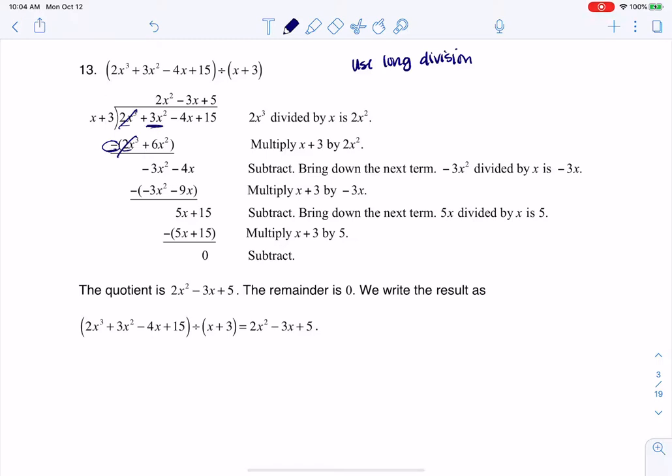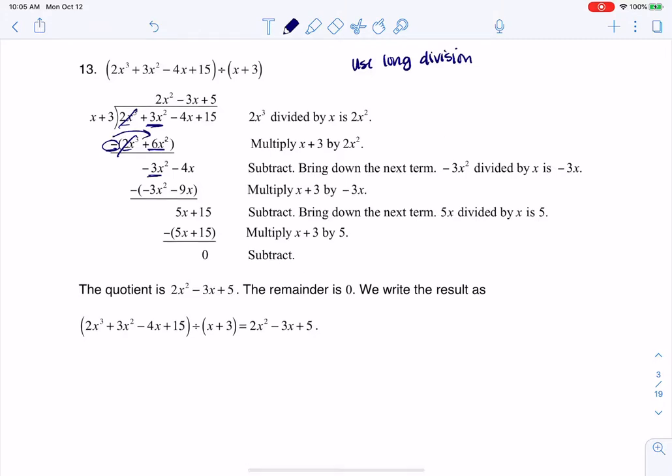3x squared minus 6x squared. We've got to remember to distribute that negative to both terms. So 3x squared minus 6x squared is negative 3x squared. So then the next piece I want to figure out is...